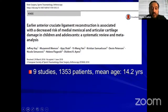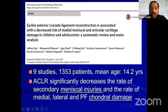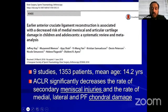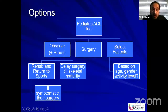Another study, a compilation of nine studies with more than 1,300 patients with a mean age of 14.2 years, found that ACL reconstruction would decrease the rate of secondary meniscus injuries. More importantly, they also found that if you don't treat these injuries, there is a higher rate of medial, lateral, and patellofemoral chondral damage. So if we don't treat these patients with surgery, the natural history of untreated ACL is not good. I would not recommend the observation group.